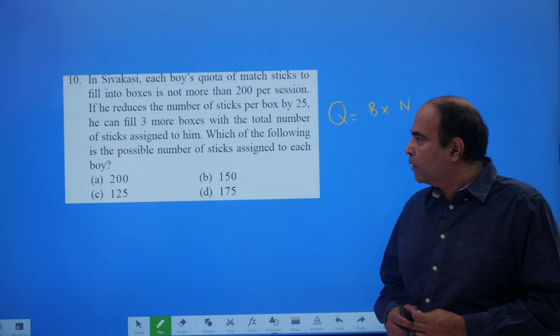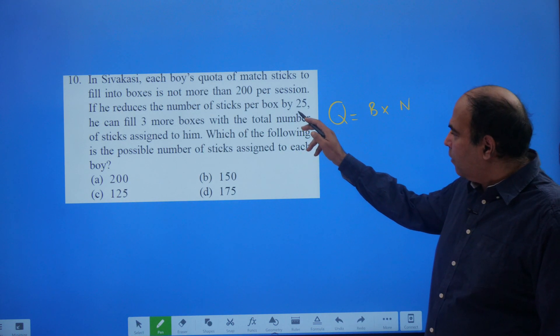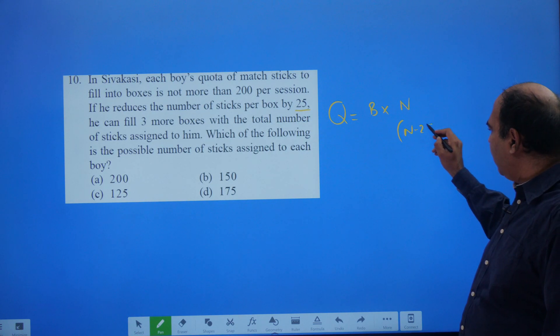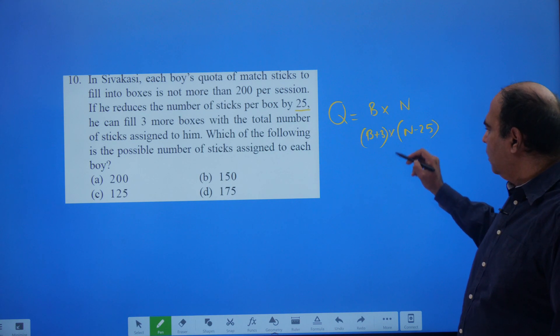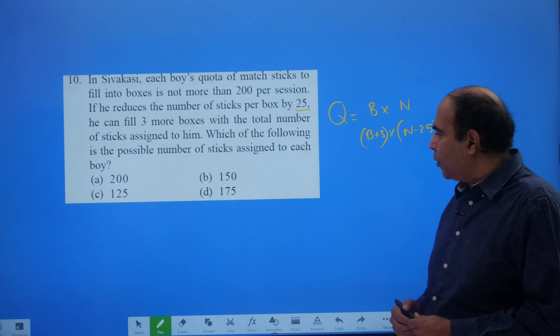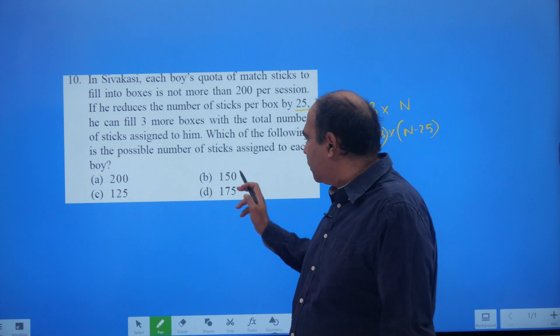The question says if he can fill three more boxes, if he reduces the number of sticks by 25, that means he goes with N minus 25, then his number of boxes goes to B plus 3. The question is leaving you with which of the following is the possible number of sticks assigned to each boy, and the question is leaving you with four options.